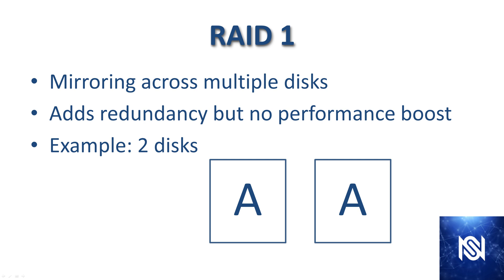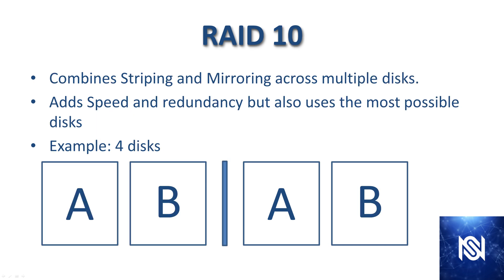RAID 1 utilizes mirroring but not striping — mirroring across multiple disks. This adds redundancy but no performance boost. With two disks, you have the same data across both — both have a complete set. You'd be able to lose one of the disks, but you won't get any performance benefits.